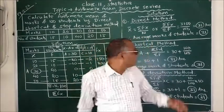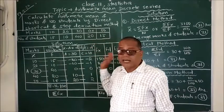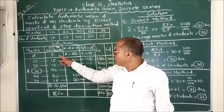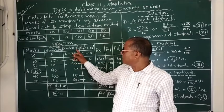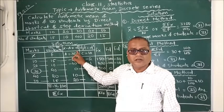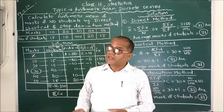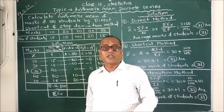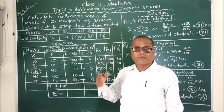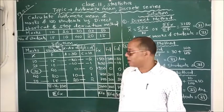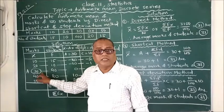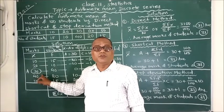In all these three formulas whatever aggregates are required we have put here in the table. We require d that is deviation, deviation of values from the assumed mean. Here we have taken 30 as the assumed mean.